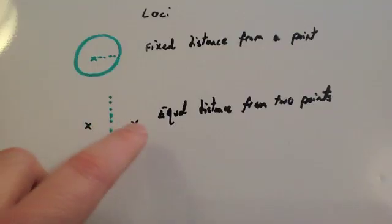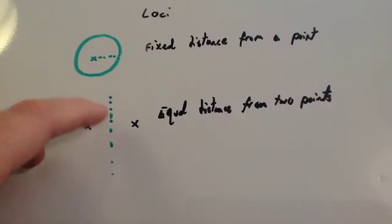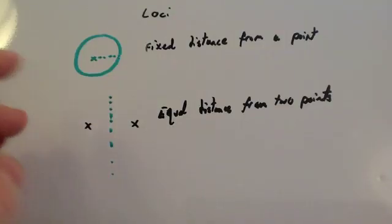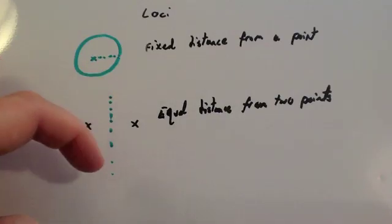Imagine I had two trees and I said I was going to put my sun lounger an equal distance between the two trees. Well, that could be in the middle, but it could be anywhere on the perpendicular bisector. So if you're ever given a question where it says something is equidistant from two points, it would be on the perpendicular bisector.